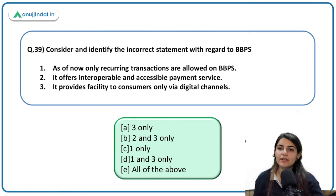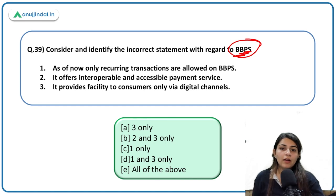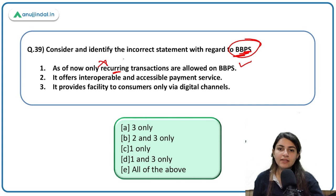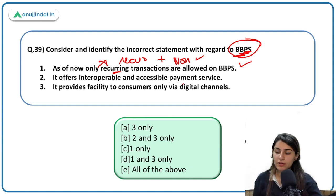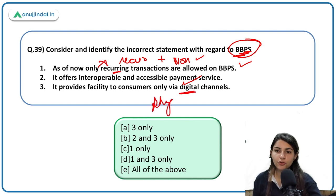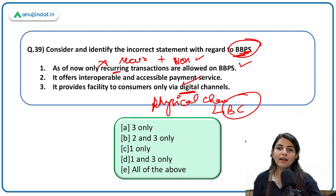About Bharat Bill Payment System (BBPS): only recurring transactions are allowed — incorrect; very recently, both recurring and non-recurring transactions were allowed under BBPS. It offers interoperable accessible payment service — correct. It provides facility to consumers only via digital channels — incorrect; physical channels are also available for payments under BBPS, working like bank correspondents.